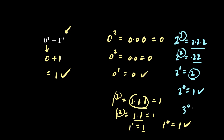3 to the 0 is 1. In fact, even 1.5 to the 0 is 1, and so is the square root of 2 to the exponent 0, which is also 1.